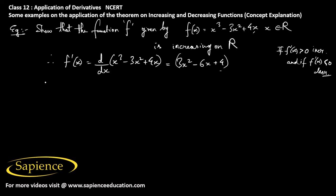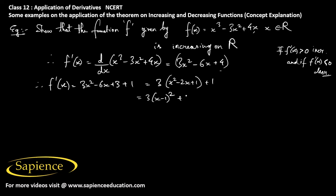So f'(x) = 3x² - 6x + 3 + 1, which can be written as 3(x² - 2x + 1) + 1 = 3(x - 1)² + 1. Now the square of any real number is always greater than or equal to 0, so this expression is always greater than or equal to 1. Therefore f'(x) is always greater than or equal to 1, which means f'(x) is always greater than or equal to 0.